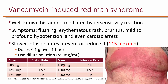If a patient starts to have a reaction, we can increase the infusion time to 90 minutes or two hours. 1250 mg and 1500 mg are recommended over a 90-minute infusion — that's about 13.8 and 16.6 mg/min respectively. 1750 mg is recommended over two hours at about 14.6 mg/min, and two grams over two hours is about 16.6 mg/min.